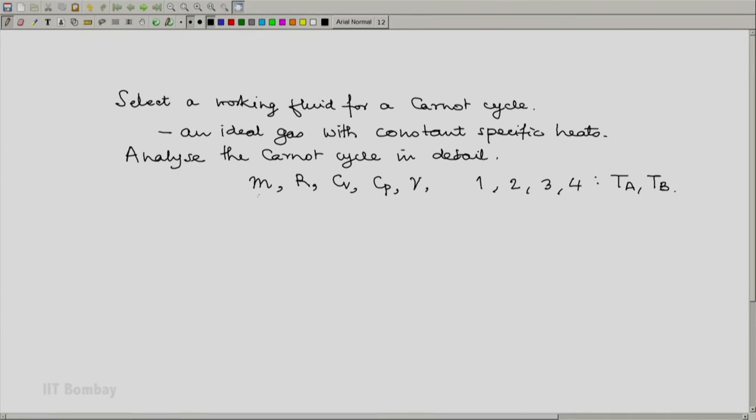After analyzing this, we will obtain expressions for Q absorbed, Q rejected, and hence we will be able to obtain an efficiency expression: eta is W by Q absorbed, which we know also equals 1 minus heat rejected divided by heat absorbed.